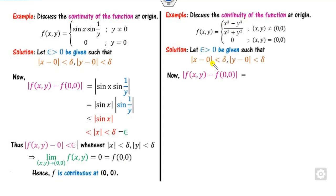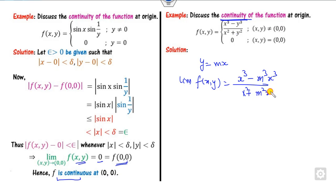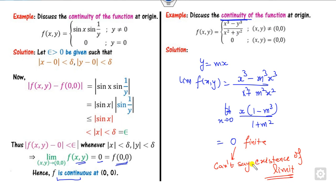For the next example, discuss the continuity. If we take the path y = mx and substitute, we get (x³ − m³x³) / (x² + m²x²), which simplifies by taking x² as common to give x(1−m³)/(1+m²). When x→0, this is 0, which is finite. But a finite result from the path test alone does not confirm the limit exists, so we cannot determine continuity by Type 1. We must apply Type 2.